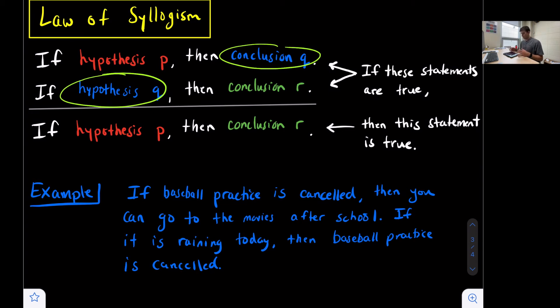So which part is listed twice? Well, we see baseball practice is canceled, baseball practice is canceled. So that must be Q. It is listed as a conclusion in the second statement. It's listed as a hypothesis in the first statement. Like I said, the order of those statements doesn't matter.